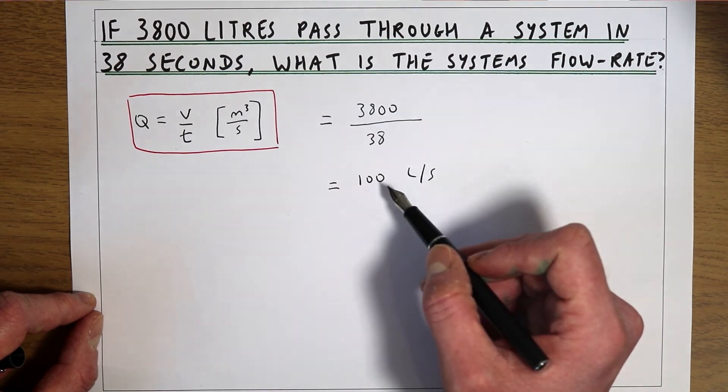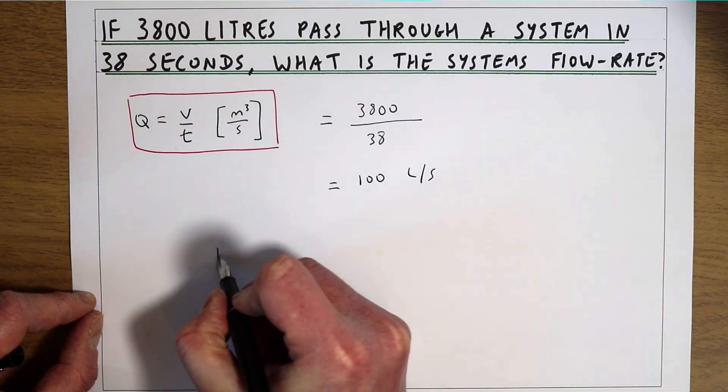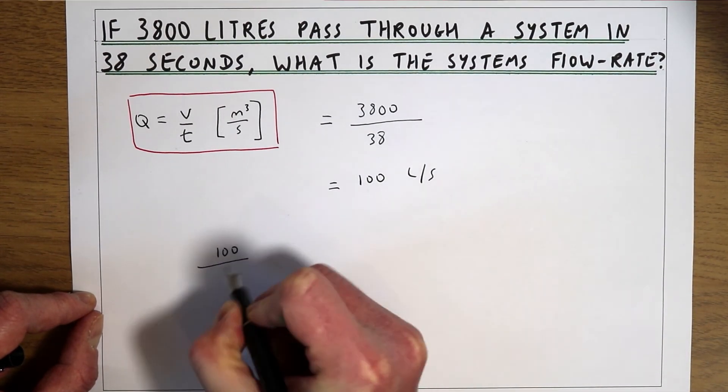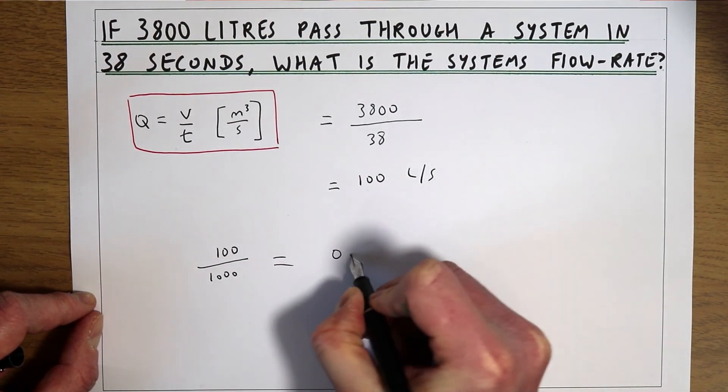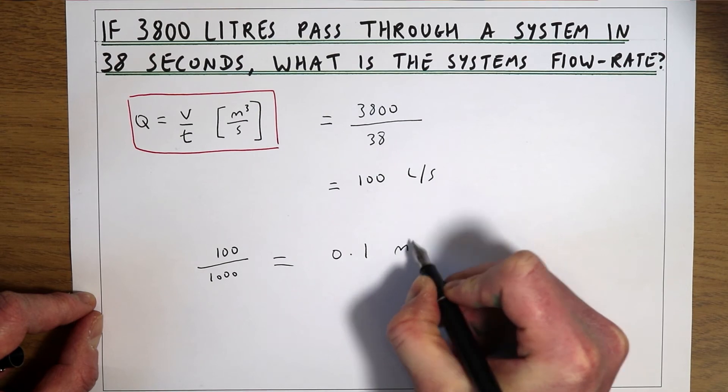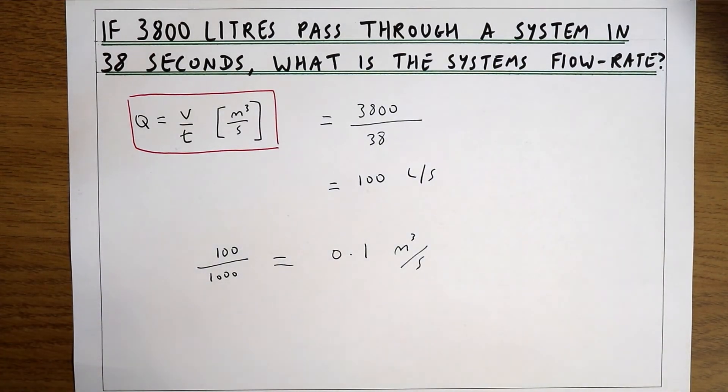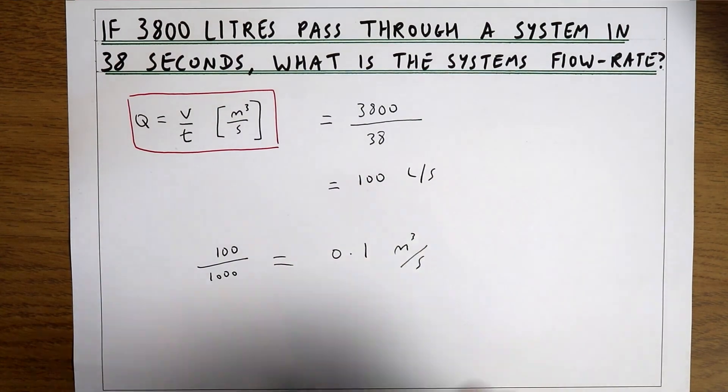There's a thousand litres in a metre cubed so if we take that answer 100 litres per second divide it by a thousand that gives us a final answer of 0.1 metres cubed per second which is the flow rate or discharge of the system.